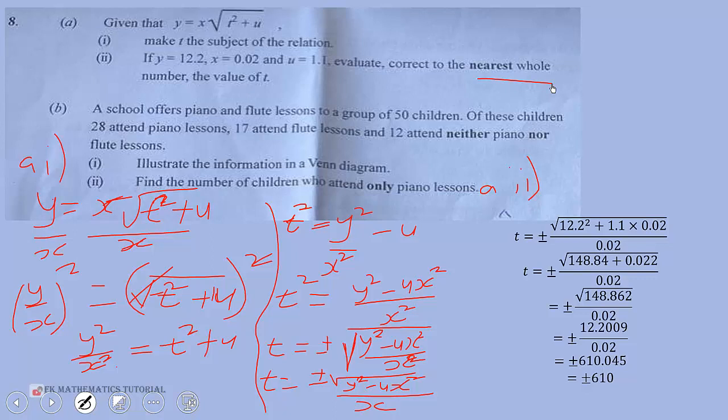Let's move straight to the b part. A school offers piano and flute lessons to a group of 50 children. Of these children, 28 attend piano lessons, 17 attend flute lessons, and 12 attend neither piano nor flute lessons. Let's illustrate the information in a venn diagram. Find the number of children who attend only piano lessons.